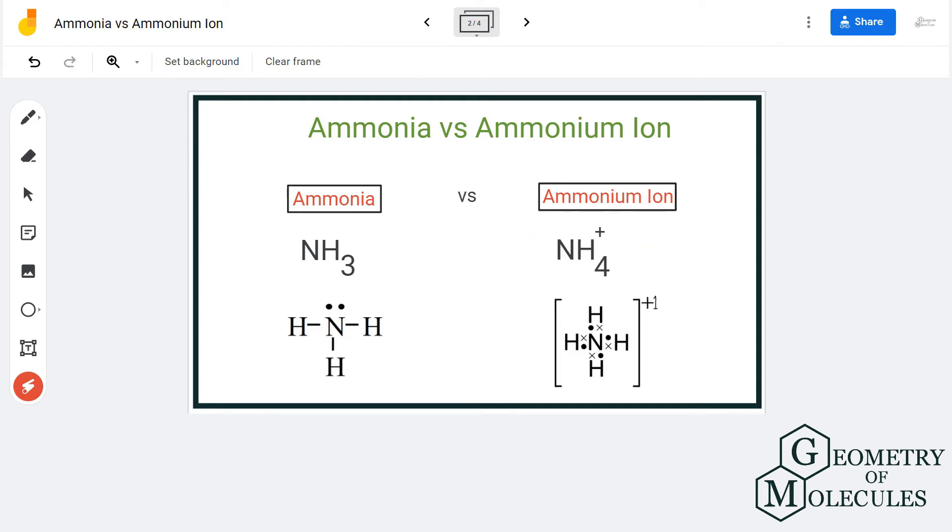NH4+ has a tetrahedral shape because the central atom is bonding to four hydrogen atoms. We can also write the structures for both NH3 and NH4+ like this. So apart from molecular shape and Lewis structure